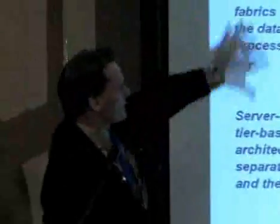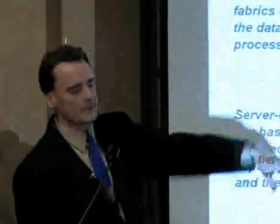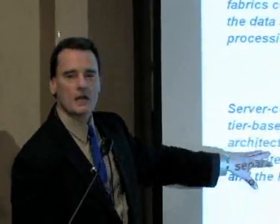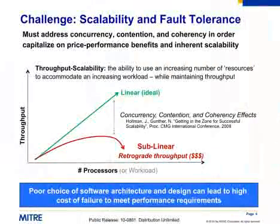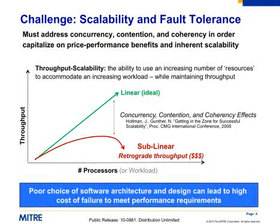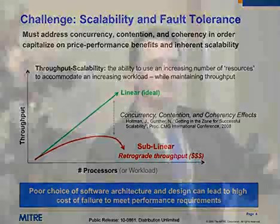Look at what happens traditionally. Traditionally, server-centric: put all the data on the server. Where's that data going to reside? Of course it's going to reside back there, many dog years away from your actual CPU, so it's going to sit there idling. You're not going to get the efficiency or good throughput. You're going to get retrograde throughput as you put more and more of these in that want that data. You can put all the money you want in — you're still not going to get the throughput. You'll get a degradation effect.